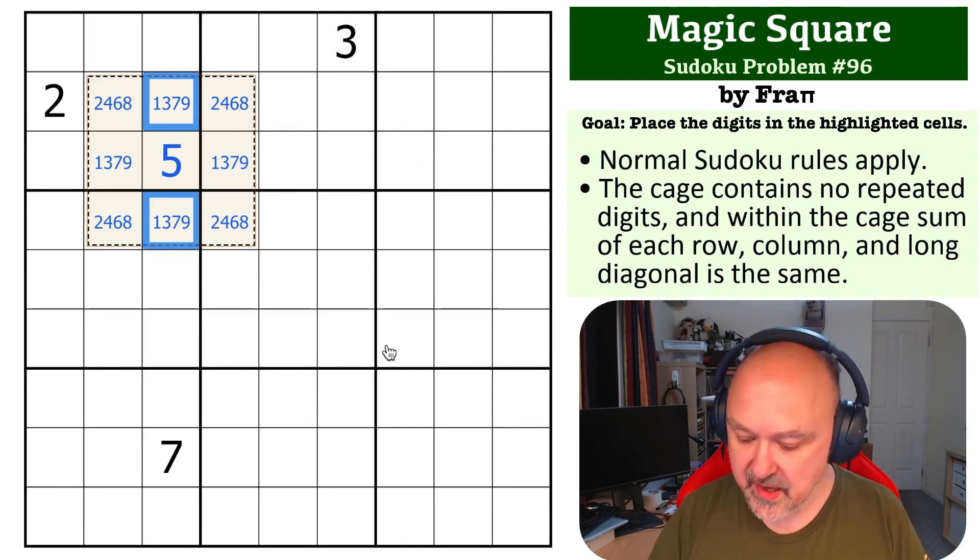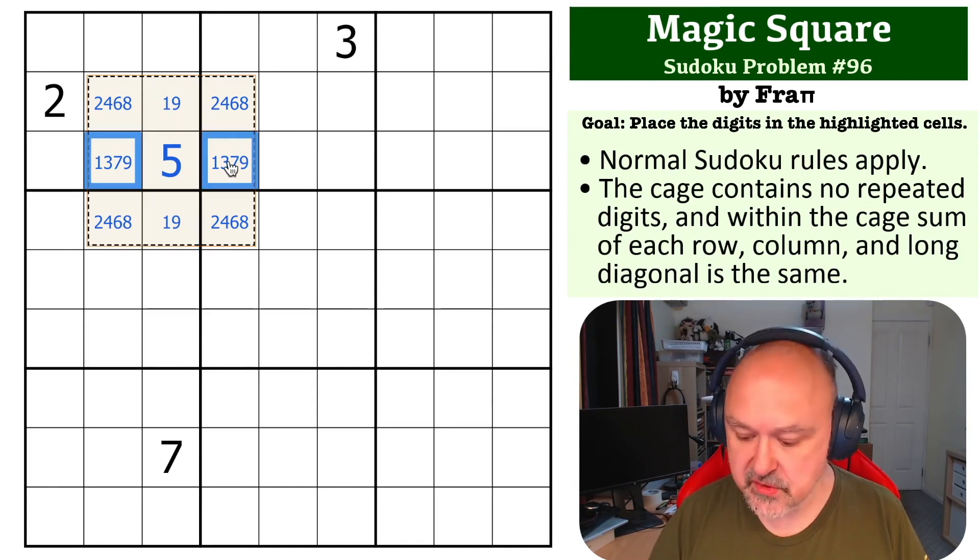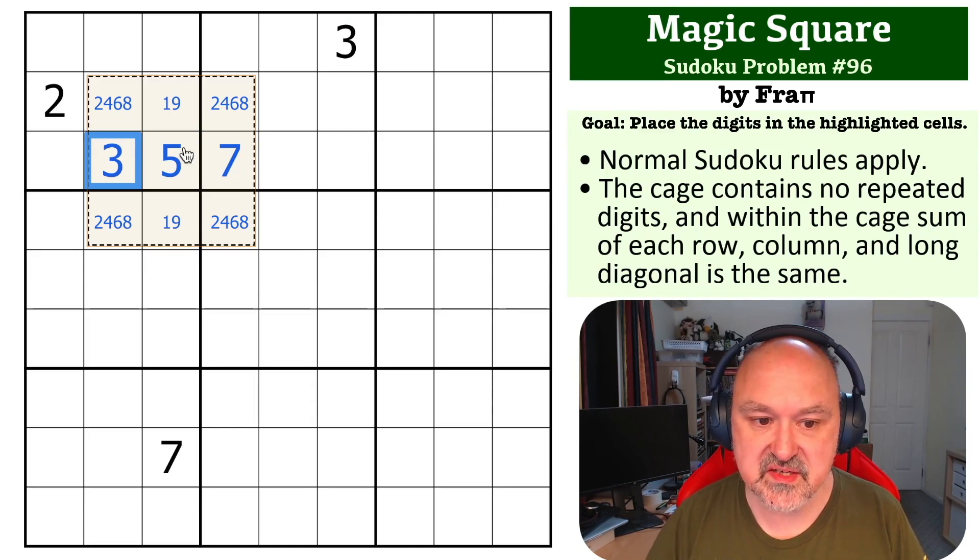Now we know that we can't put three, seven here because these have to sum to 10, and the seven is looking at it. So those are not three, seven. These are not one, nine. This is the three, seven. This three makes this the seven and this the three.